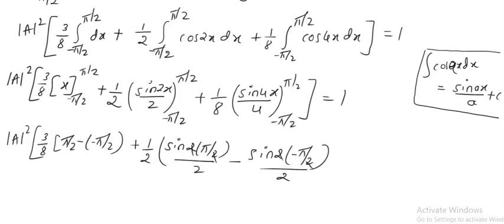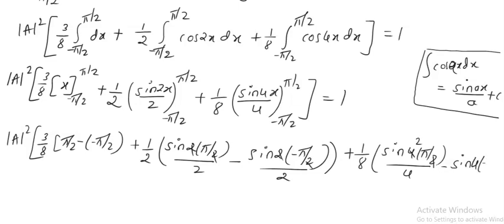For the 1 by 8 term: sin(4 times pi by 2) divided by 4 equals sin 2pi, which is 0. Minus sin(4 times minus pi by 2) divided by 4 gives sin of minus 2pi, which becomes minus sin 2pi, also 0. So the sin 2x and sin 4x terms are all zero, and the whole equation reduces.